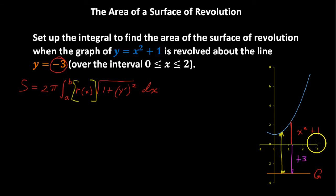So our total distance, r of x, if you will, that distance between the graph and the line of revolution, is x squared plus 1 plus the 3, so x squared plus 4. And that is what we'll plug in here for r of x.